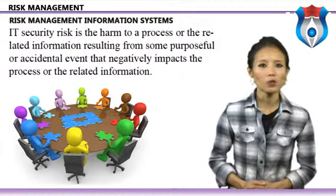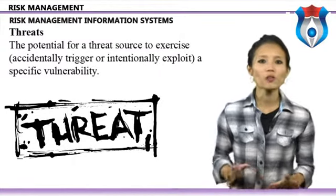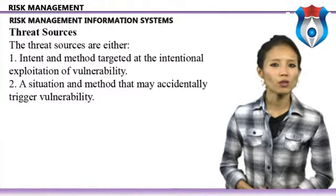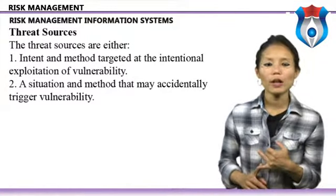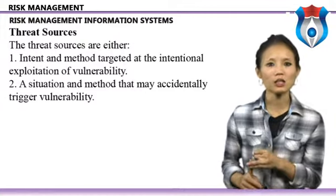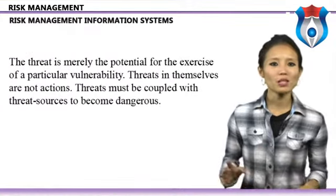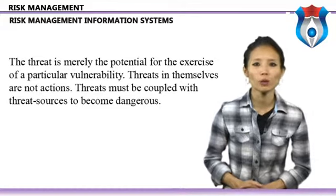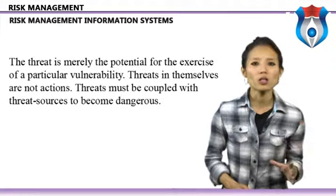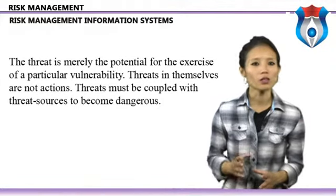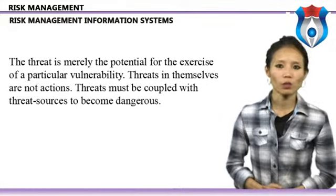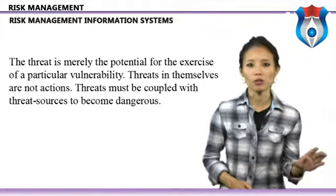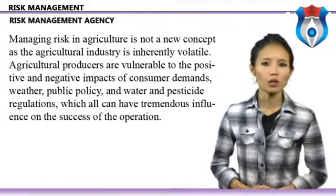Risk is a function of the likelihood of a given threat source exercising a particular vulnerability and the resulting impact of that adverse event on the organization. Threats represent the potential for a threat source to accidentally trigger or intentionally exploit a specific vulnerability. Threat sources are either intent and method targeted at intentional exploitation, or a situation and method that may accidentally trigger a vulnerability. Threats must be coupled with threat sources to become dangerous — this is an important distinction when assessing and managing risk.